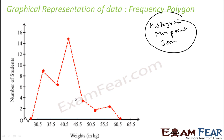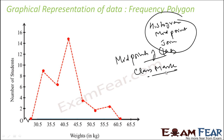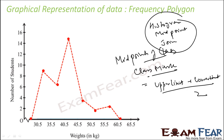For this, what we have to do is find the midpoints of the class first. The midpoint of a class is called the class mark. The class mark is nothing but: upper limit plus lower limit divided by 2. Find the class mark and then you can plot the points and draw the frequency polygon without drawing the histogram.